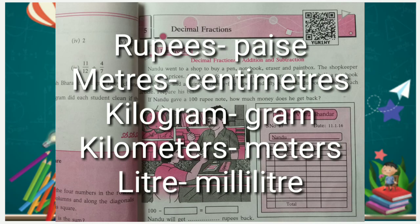While solving problems with the units rupees-paise, metres-centimetres, kilogram-gram, kilometres-metres, litre-millilitre, we have used fractions with up to 2 decimal places. When solving problems with units kilogram-gram, kilometre-metre, litre-millilitre, we have to use fractions with up to 3 decimal places.